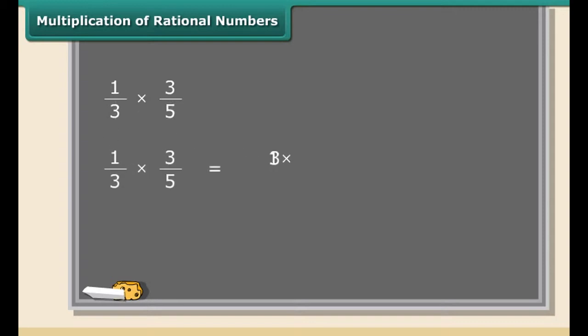Now we will study multiplication of rational numbers. This is the easiest one. To multiply two rational numbers, just multiply the numerators and denominators separately like this. Here is an example. We will multiply 1 by 3 and 3 by 5. First of all, we will multiply the numerators. Now we will multiply the denominators. Now this fraction can be further simplified to 1 by 5.